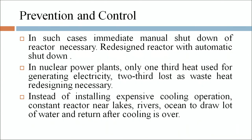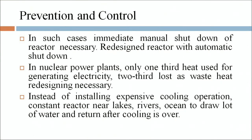For prevention and control in such cases, immediate manual shutdown of the reactor is necessary, and reactors should be redesigned with automatic shutdown systems. In nuclear power plants, only one third of the heat is used for generating electricity while two thirds is lost as waste heat — redesigning is necessary instead of costly cooling operations. Reactors are located near lakes, rivers or oceans to draw large amounts of water for cooling and return it after cooling.